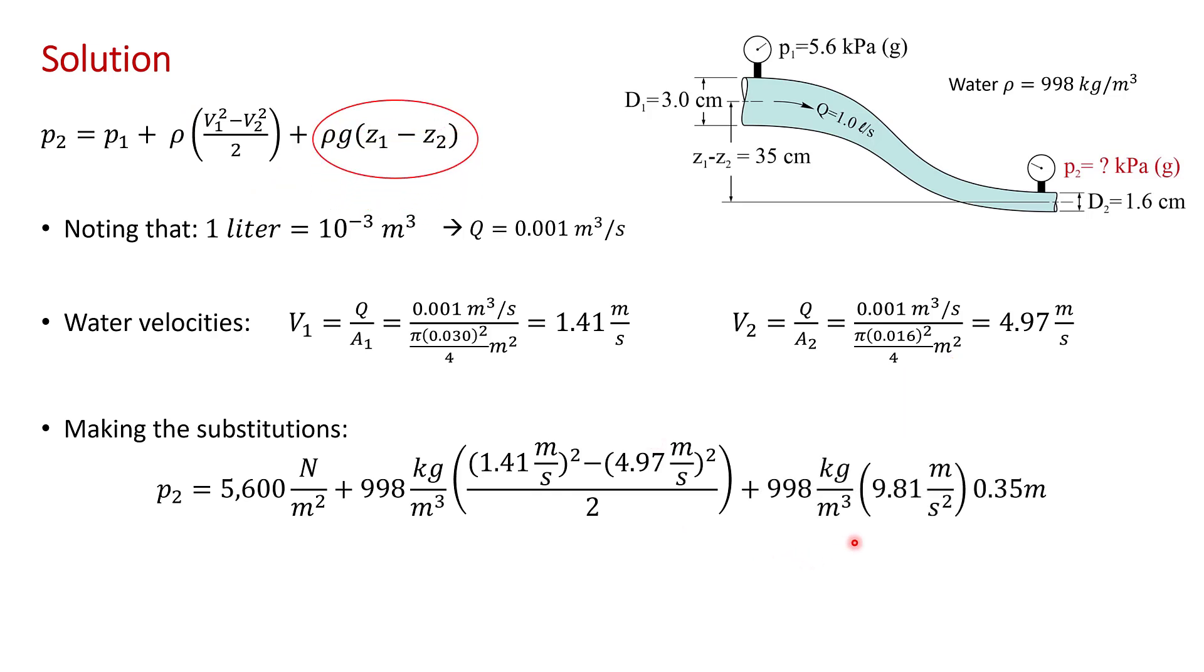This is the potential energy term, where the change in height is 0.35 meters. Recall from hydrostatics in chapter 2, as you go deeper in the fluid, the pressure increases. So, this term will be positive and act to increase P2.